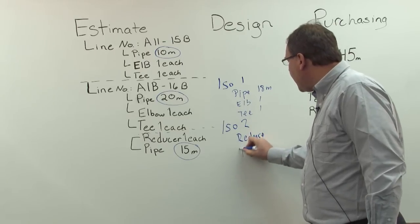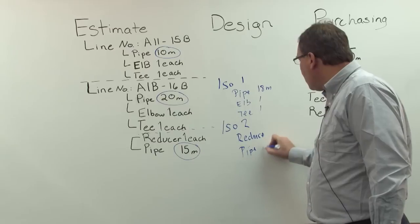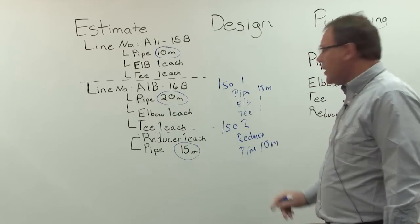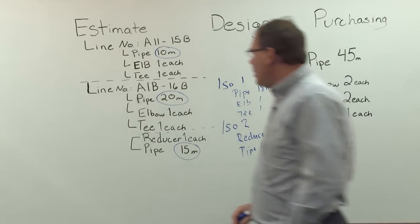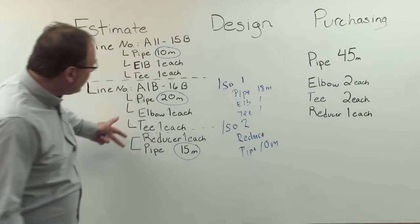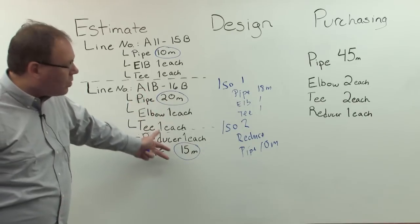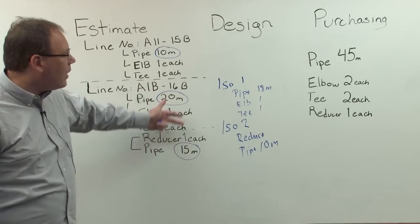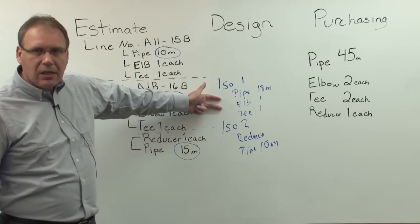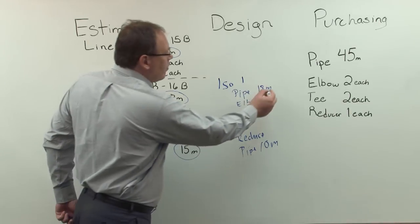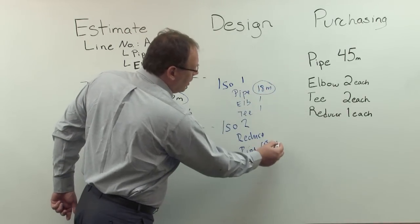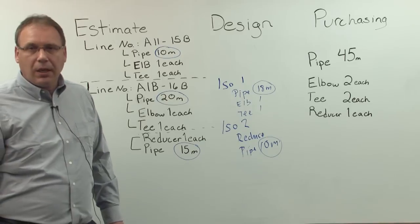We still need a reducer, but the pipe, let's say, we need now 10 meters. Okay? So, before the whole line number was estimated with 35 meters. Now we actually identify, doing the detailed design, it's not anymore 35 meters. It's now 28 meters. Right?